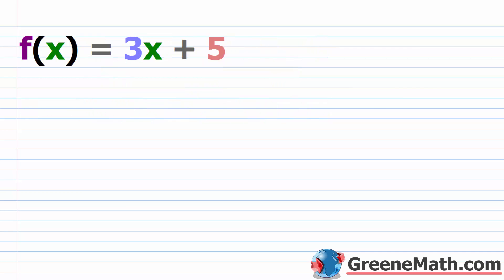The next thing you'll come across in this section is finding the inverse of a one-to-one function. We already know something like f(x) = 3x + 5 is a one-to-one function — we know how to prove that graphically and also algebraically. So once you've determined that it's a one-to-one function, how can you find the inverse? Basically what you want to do is replace f(x) with y. So you go y = 3x + 5 — that's the very first step. Then the next thing you want to do is swap x and y. Remember, these are going to be reversed — the x values become y values, and the y values become x values.